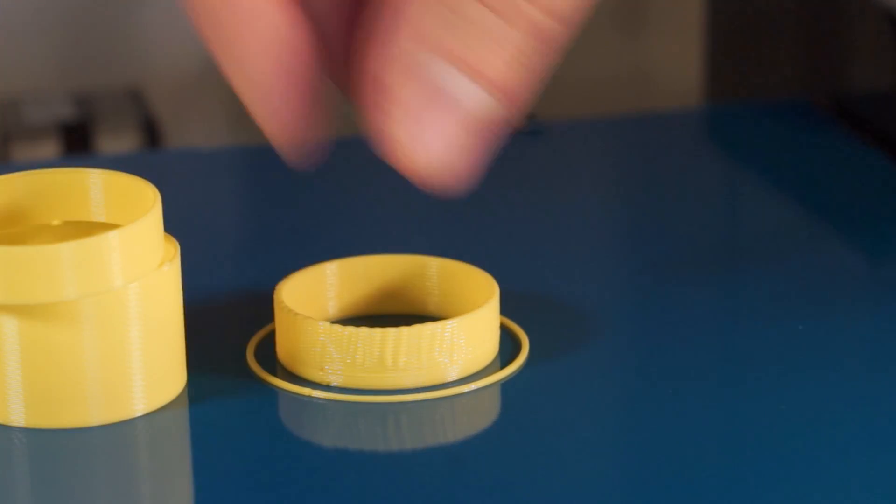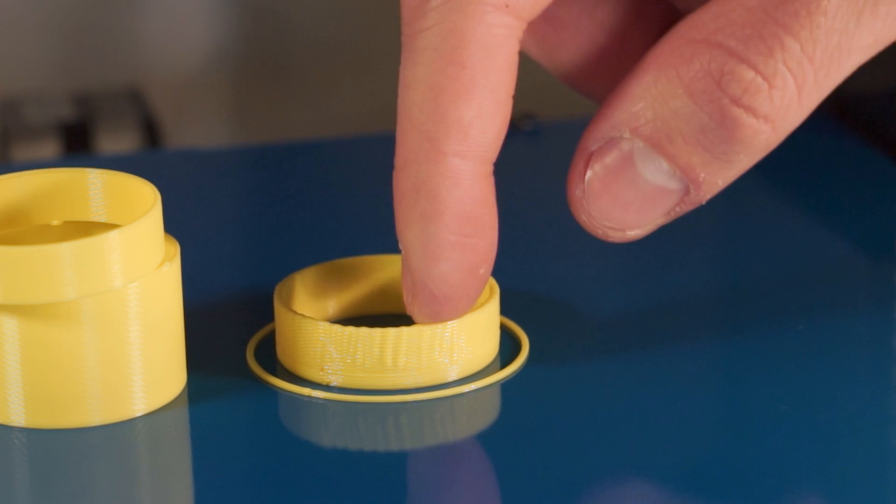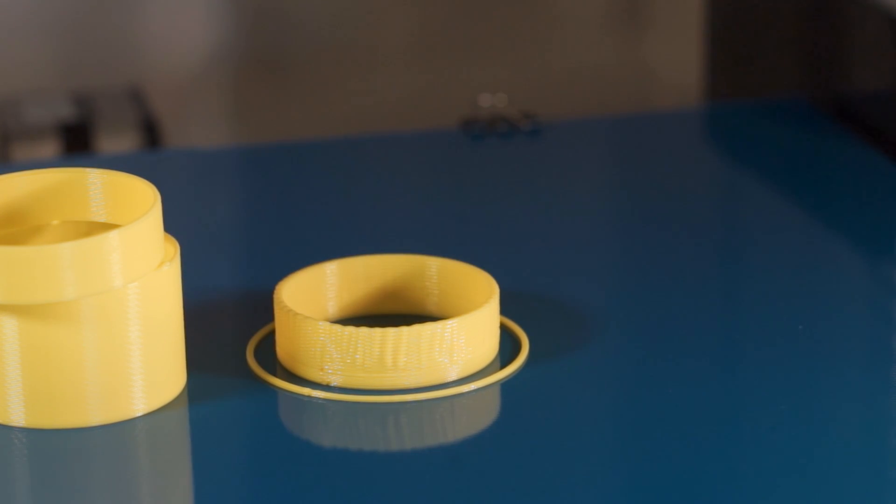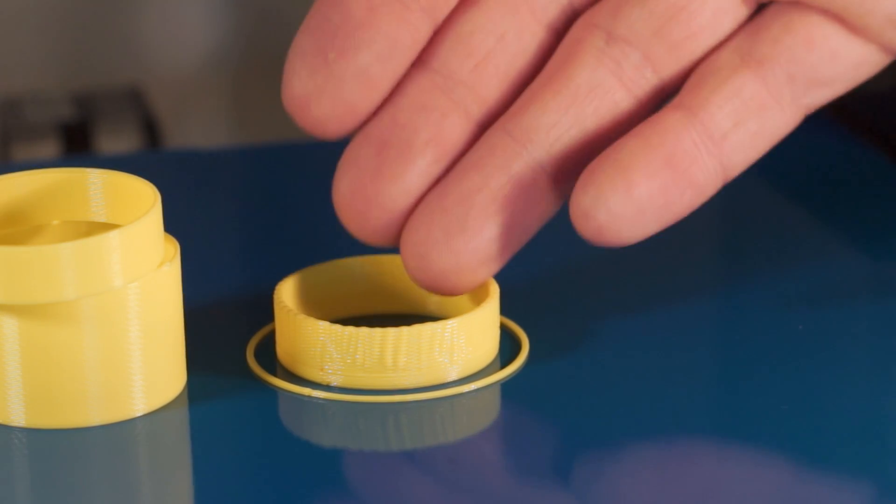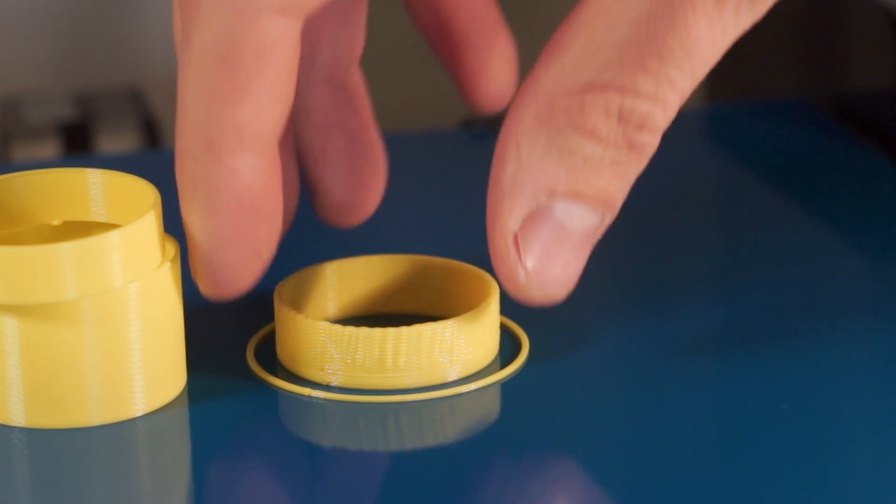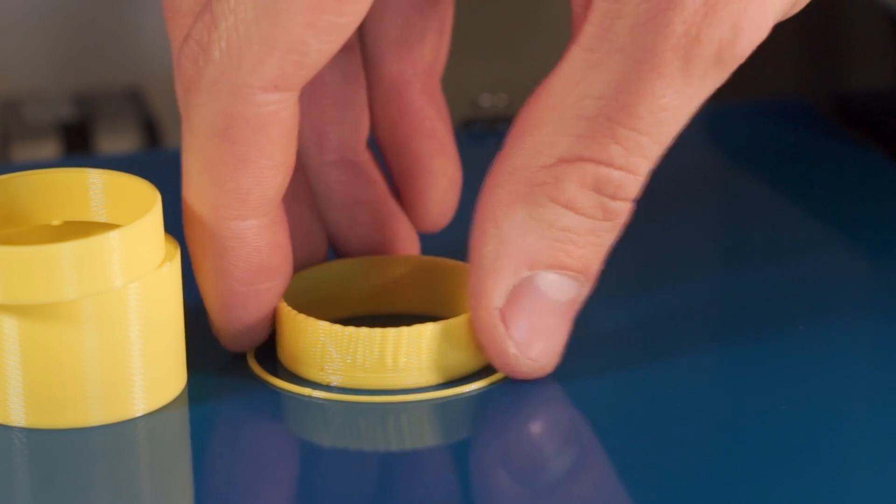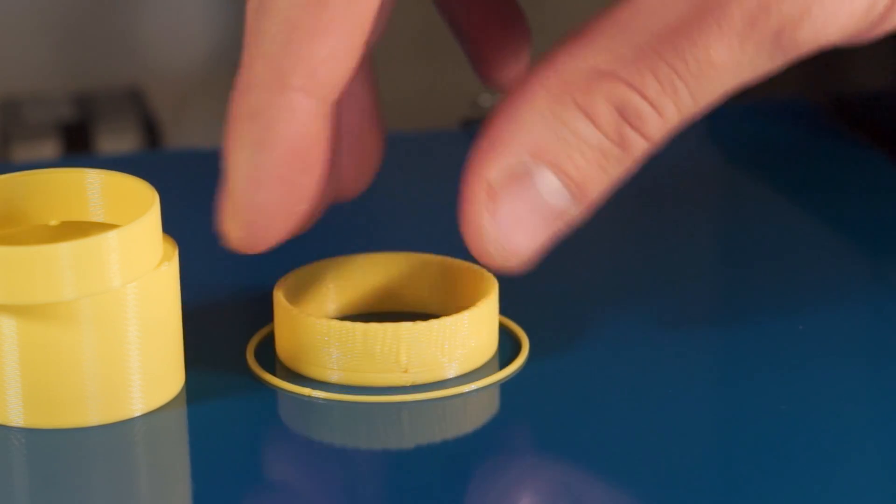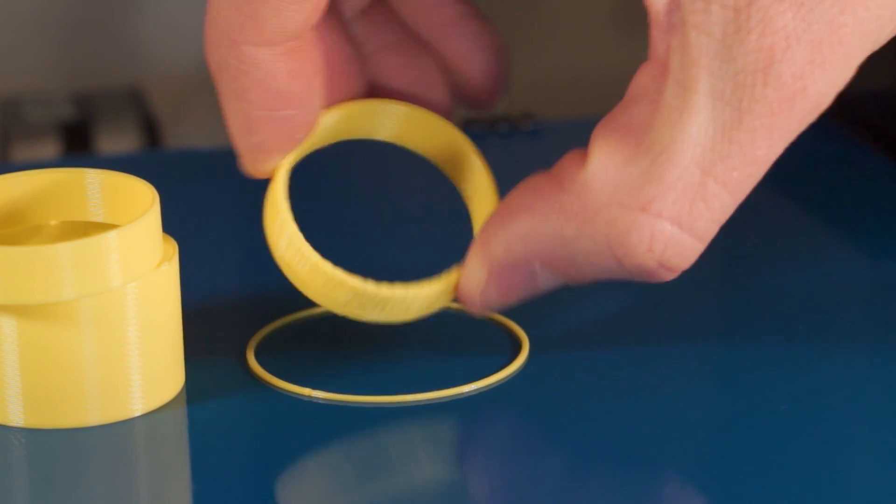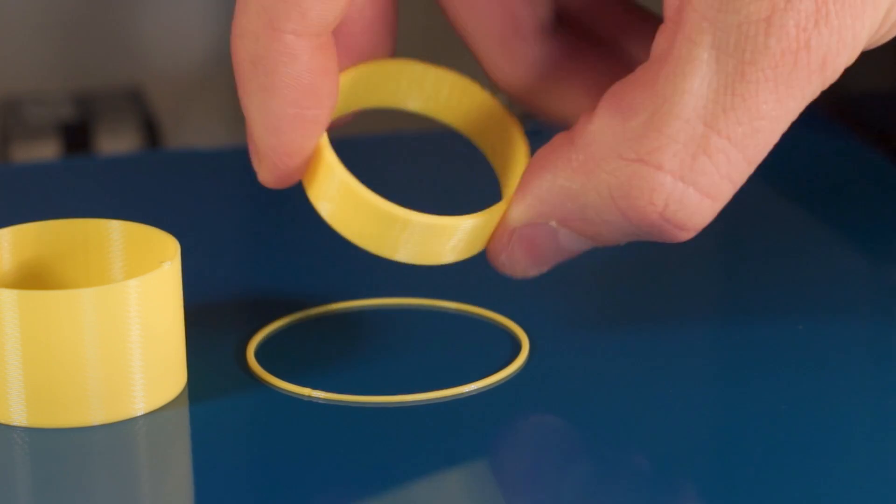And then over here this is 1.2 millimeters, which is the widest that the Prusa slicer will let me go with a 0.4 millimeter nozzle. I haven't found an override for it yet, although I haven't really looked into it that much. But that's something I want to try and do, get thicker extrusion widths just for fun really.